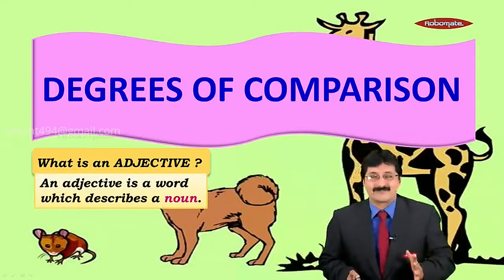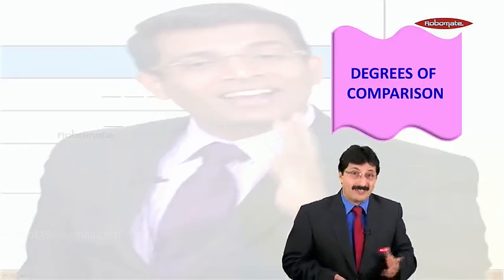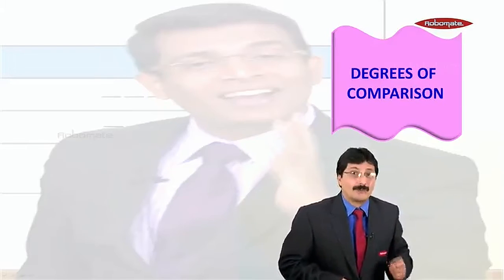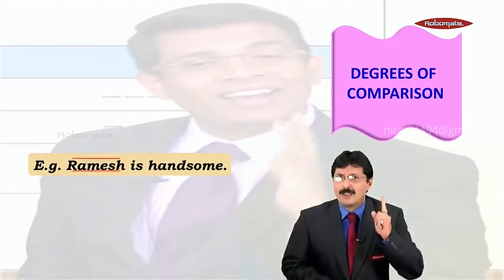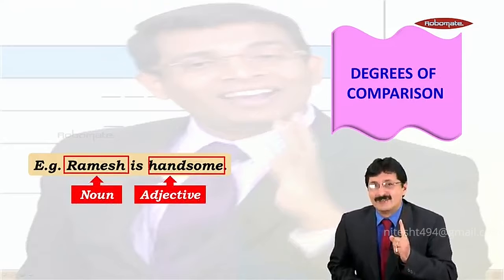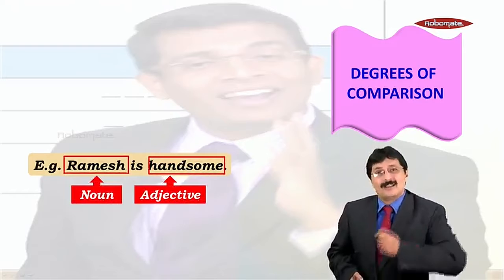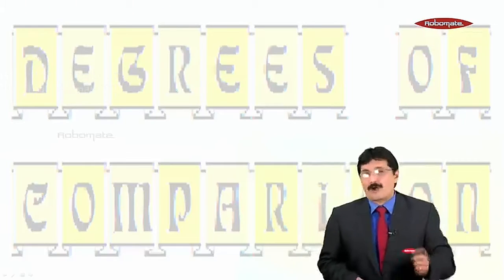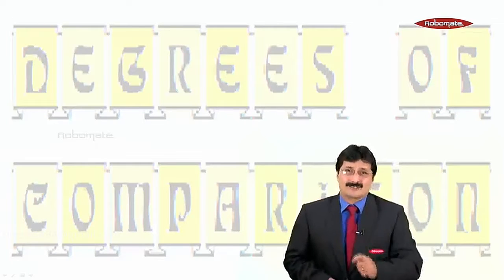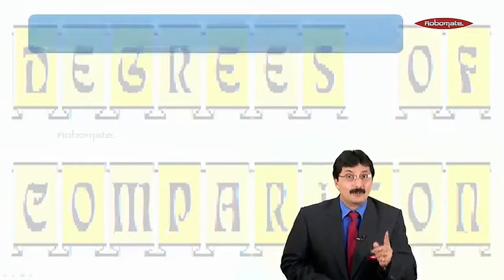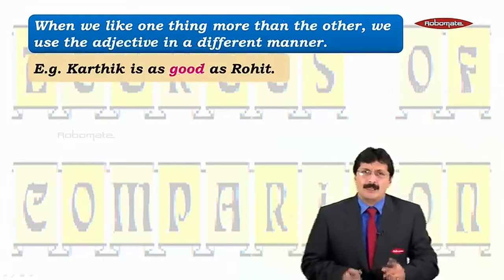Let's take an example. Look at this handsome guy — he is the head of the geometry department. So we say 'Ramesh is handsome.' Ramesh is the noun, handsome is the adjective — exactly what I told you. An adjective is a word that qualifies or describes a noun or a pronoun. And today, my dear friends, we are doing degrees of comparison of adjectives and adverbs.